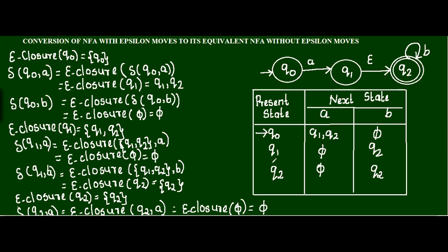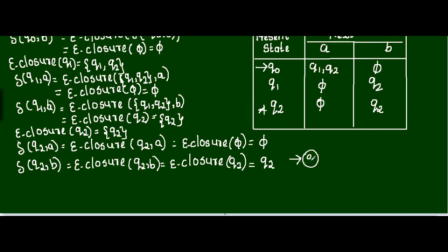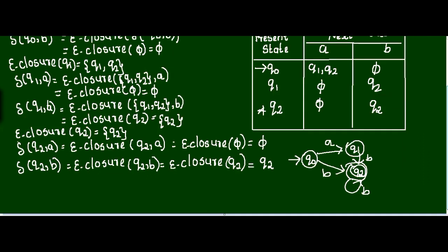Now, which one is the final state? In this example Q2 is the final state, so here also Q2 is the final state. Now I am going to draw the transition diagram. Q0, if input is A, there are two next states: Q1 and Q2. Q1, if input is B, next state is Q2. Q2, if input is B, next state is Q2. This is how we convert NFA with epsilon-moves to NFA without epsilon-moves.